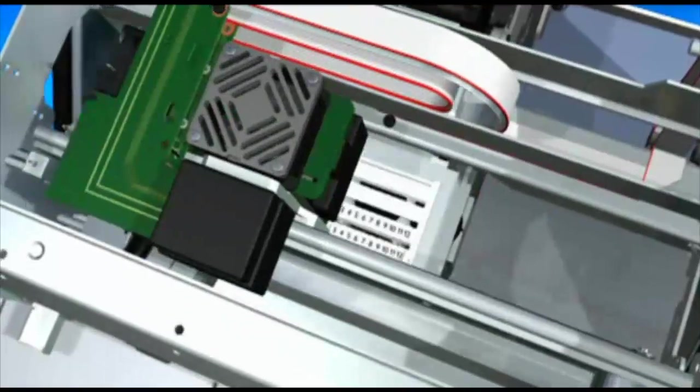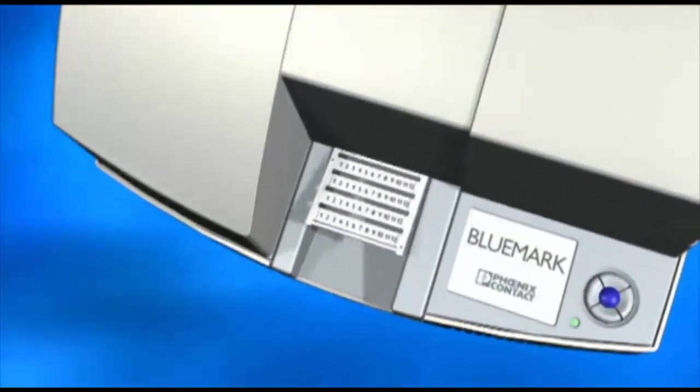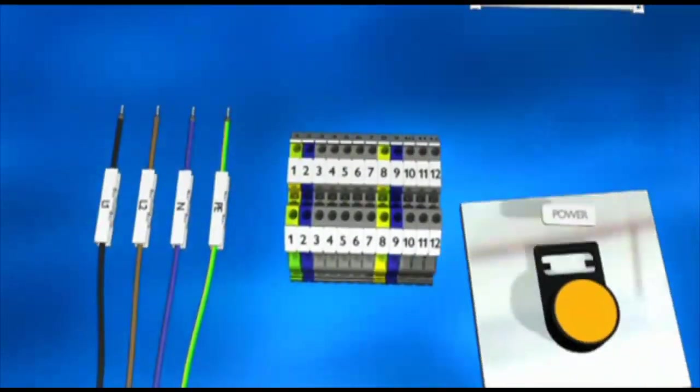Bluemark is a UV printer from Phoenix Contact. This innovative printer produces a variety of markers and tags for all the components and equipment inside your industrial control cabinet.